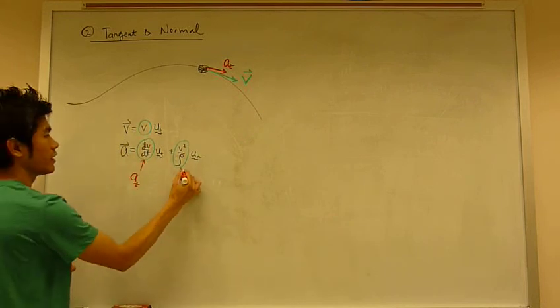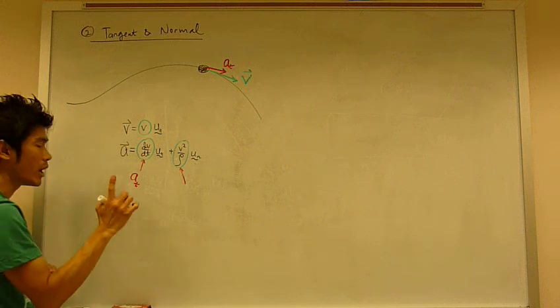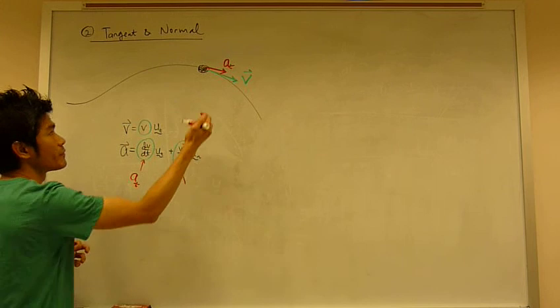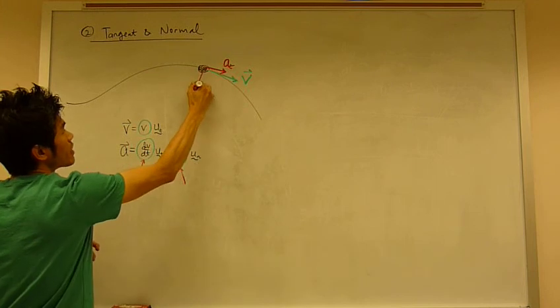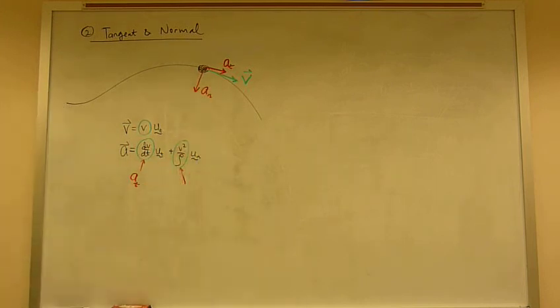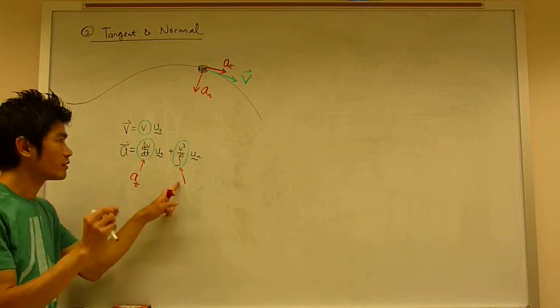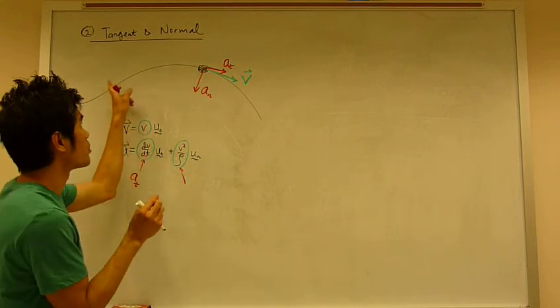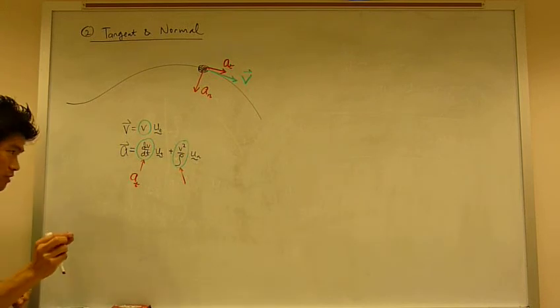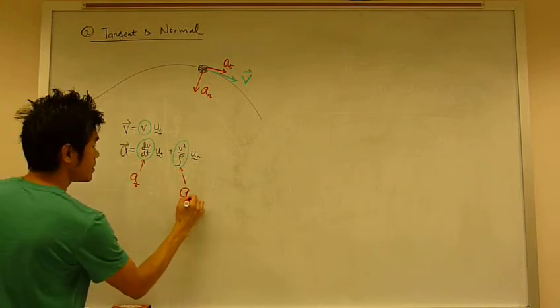And then I also have the normal component, which is something unique about this coordinate system. You always, always have a normal component of acceleration as long as the particle is traveling along the curved path. So this is AN.